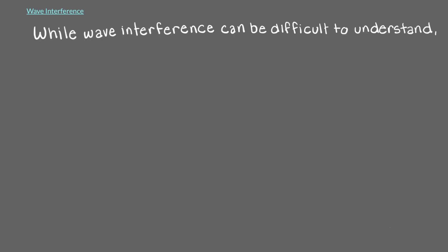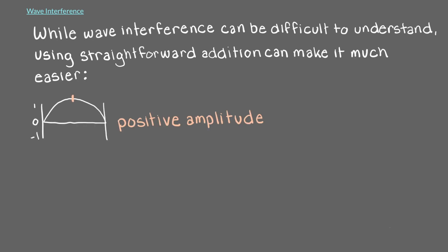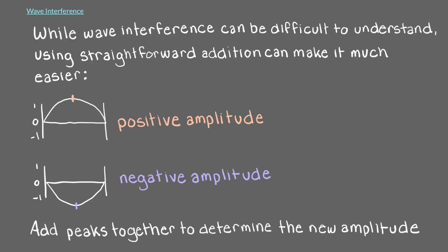While wave interference can be difficult to understand, using straightforward addition can make it much easier. Remember that waves that peak above the axis have a positive amplitude, while waves that peak below the axis have a negative amplitude. When waves combine, always add the peaks together to determine the new amplitude of the wave.